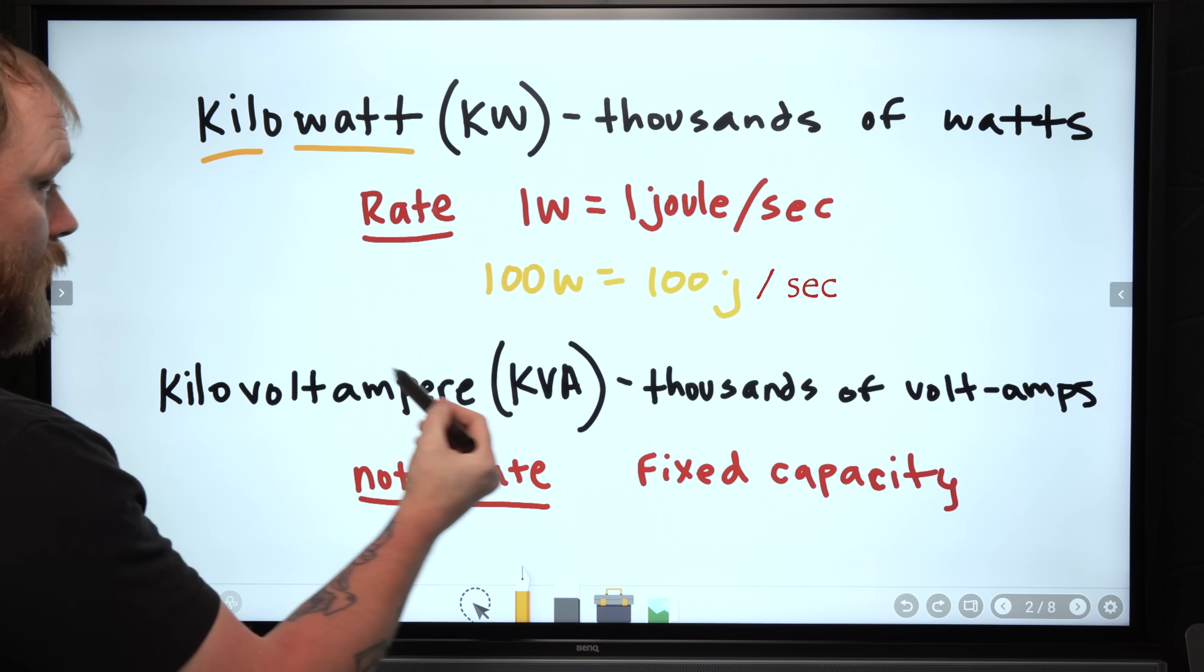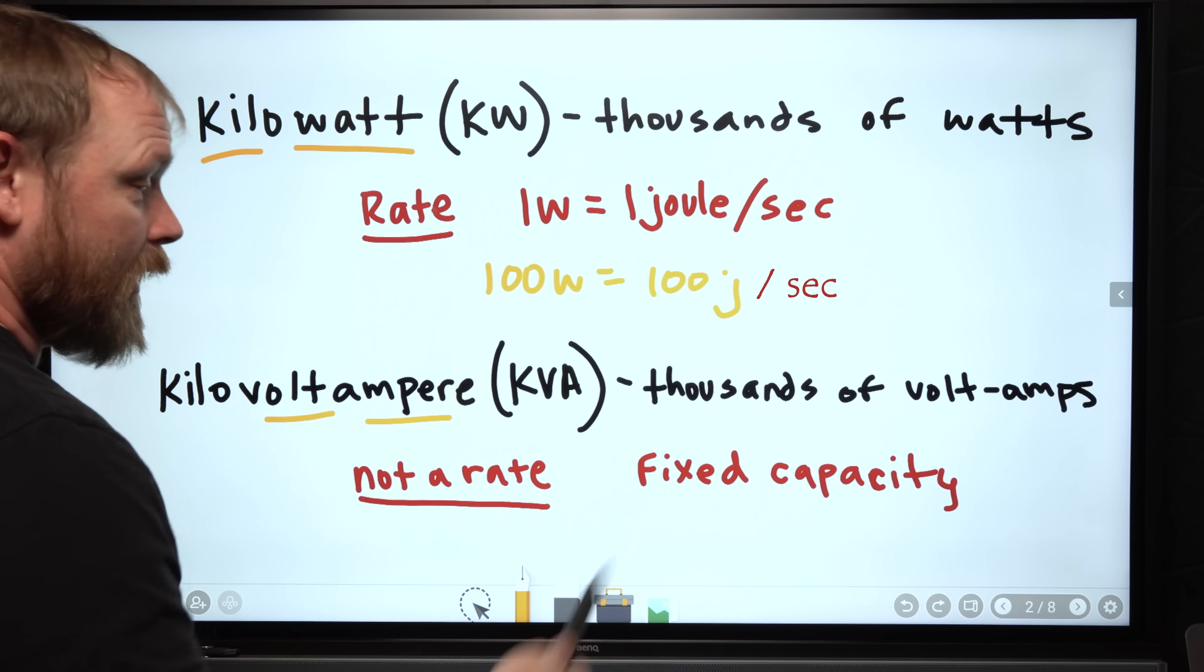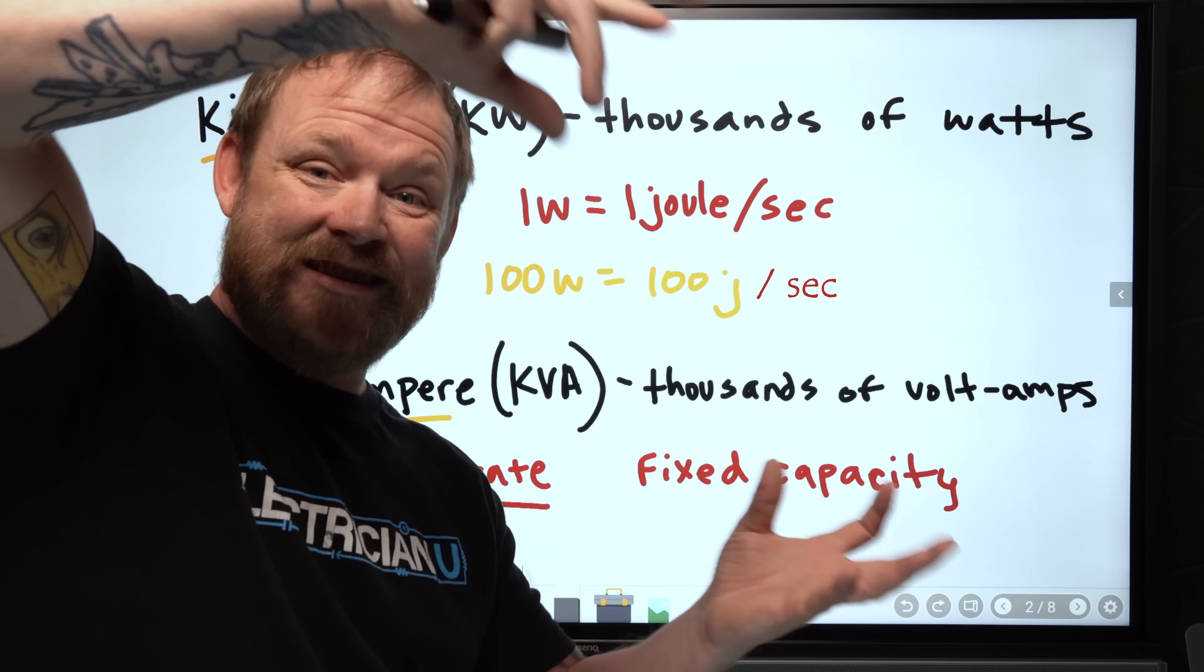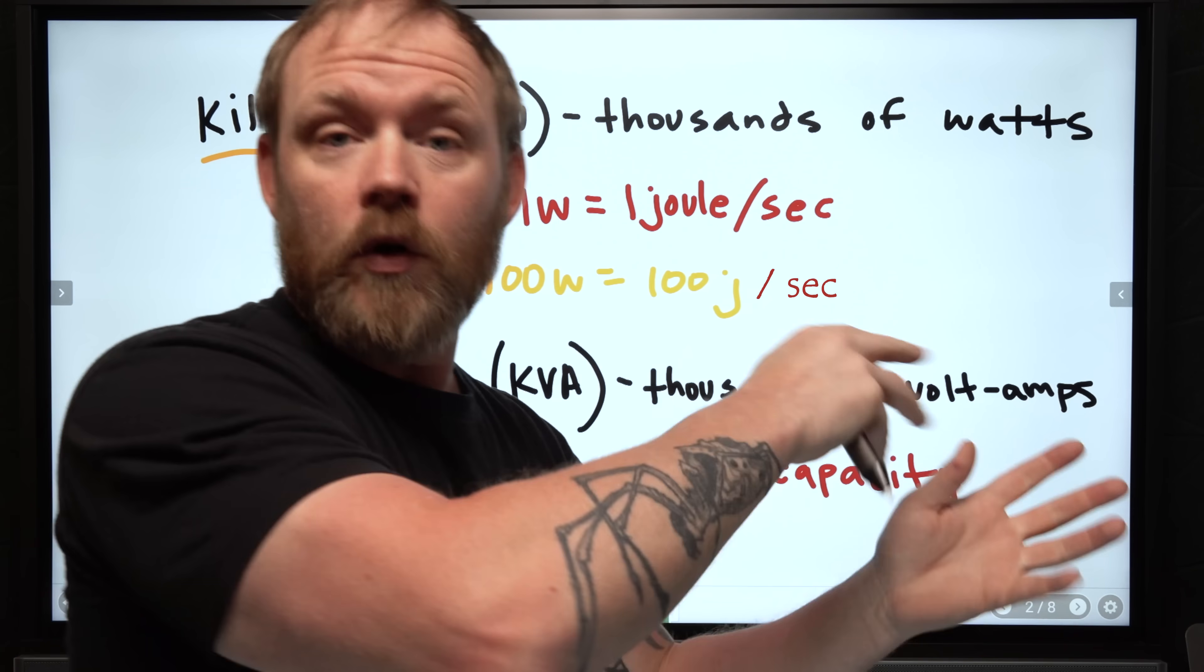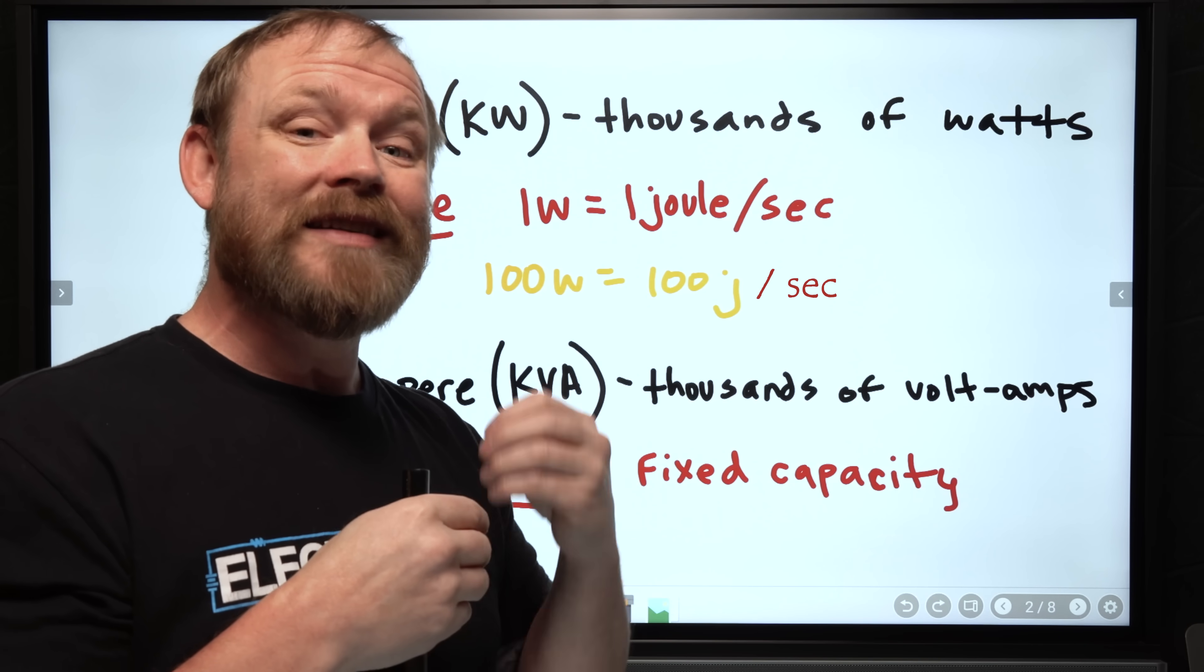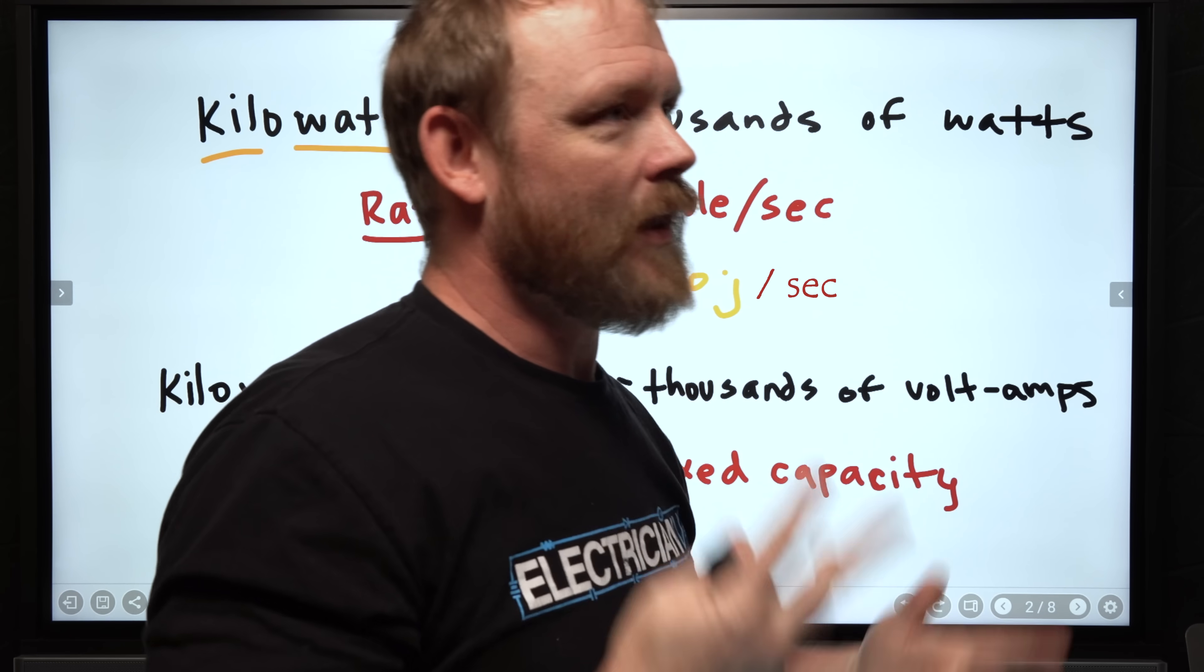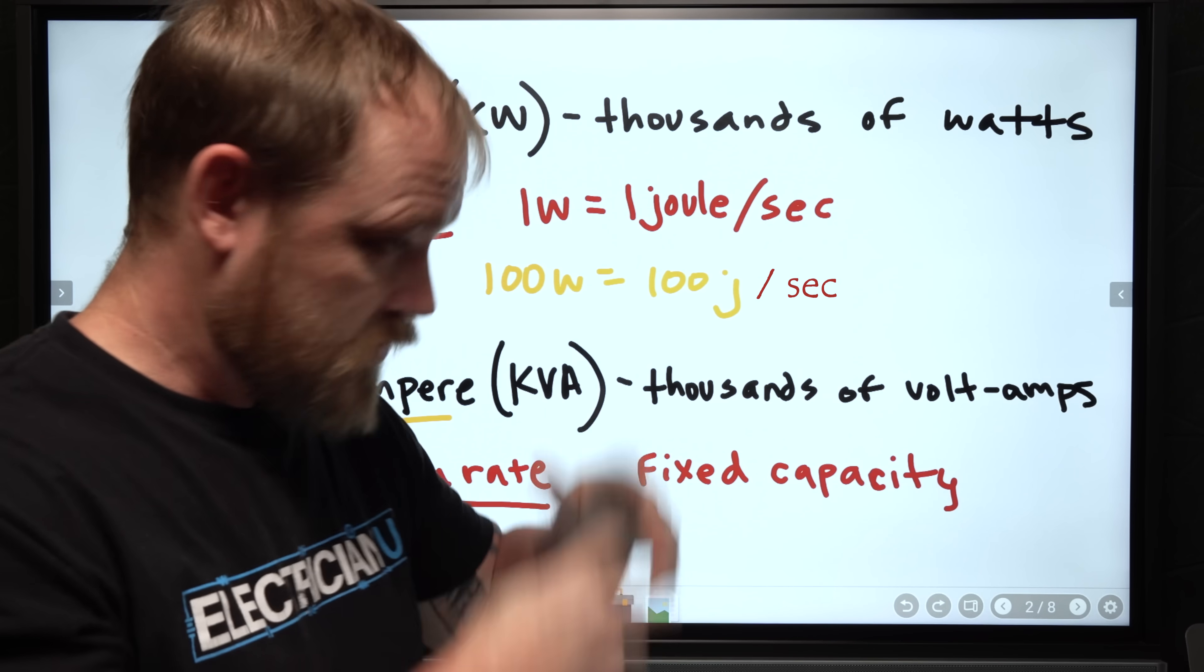When we talk about a kilovolt amp, KVA volt amp, volts times amps is a volt amp. We're talking about thousands of volt amps, and it's not a rate this time. It is a fixed capacity. When you talk about a VA, we're talking about how much fixed capacity does this system have to supply current flow, to supply a certain voltage, to be able to transfer energy to a load. A lot of times when you're talking about KVA, we're talking about the supply side. When we're talking about KW, we're talking about the actual load and what it's consuming. Storage capacity available and consumption.